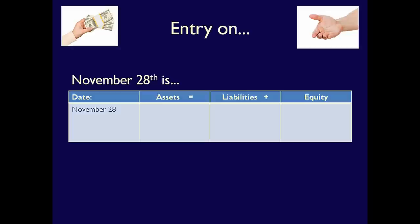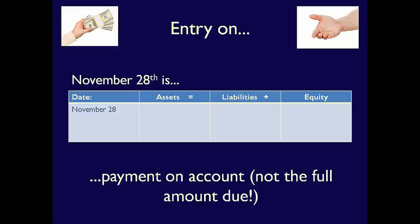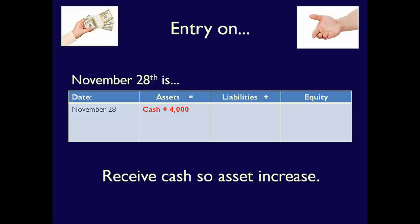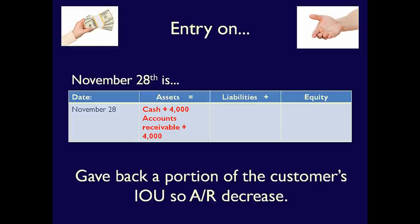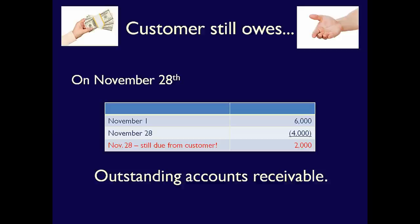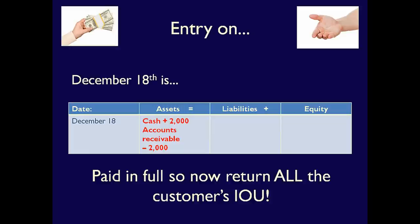On November 28, the customer pays $4,000 on account — meaning a partial payment, not the full invoice. What did we get? Cash — assets increase. What did we give away? We gave back only a portion of the customer's IOU, $4,000 of the outstanding $6,000. We reduce accounts receivable by $4,000. The end result: accounts receivable has gone down, and only $2,000 is still due from the customer. They owe us $2,000, so it remains as an asset with future economic benefit.